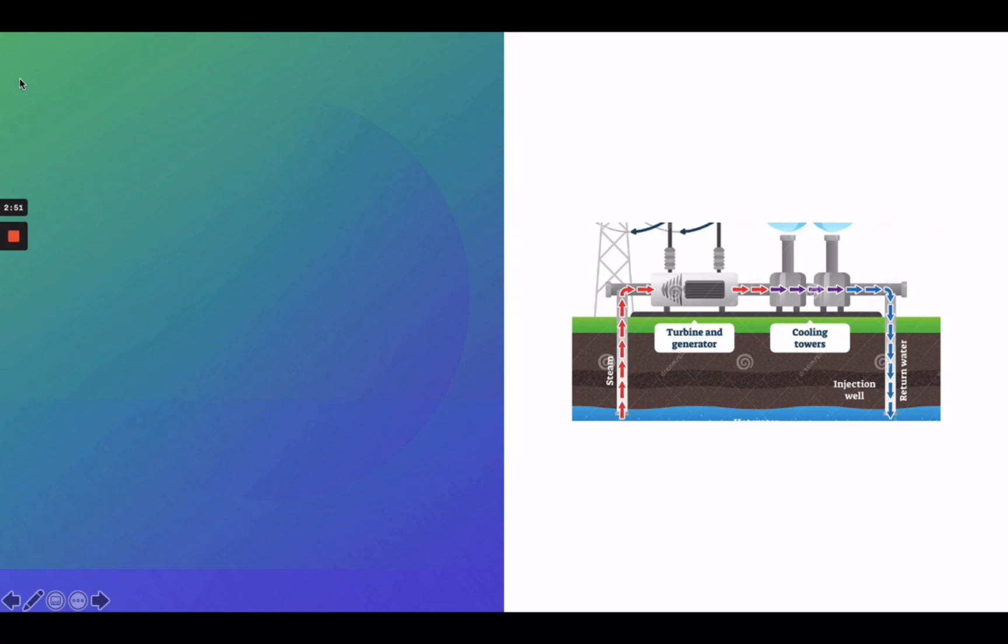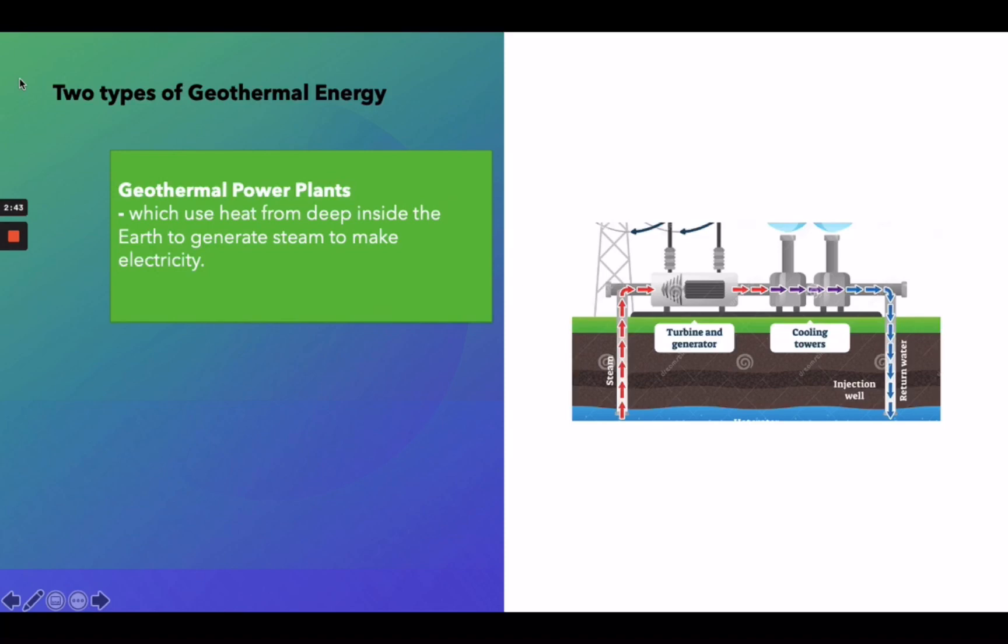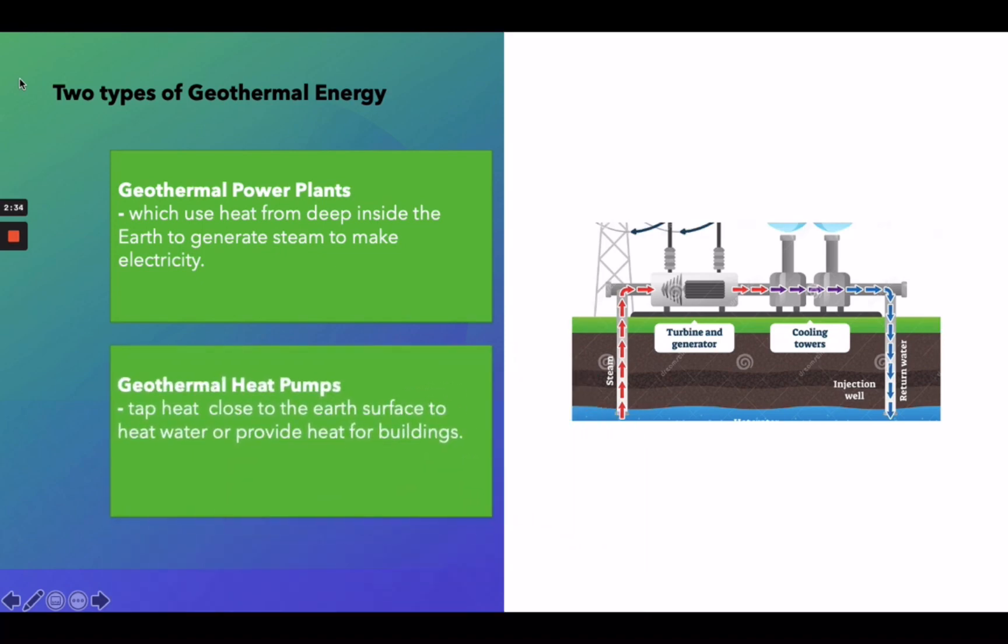There are two types of geothermal energy. First is geothermal power plants, which use heat from deep inside the Earth to generate steam to make electricity. While the second one is geothermal heat pumps, which tap heat close to the Earth's surface to heat water or provide heat for buildings.